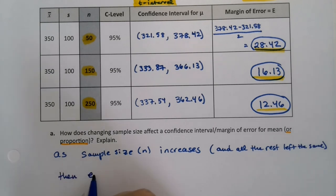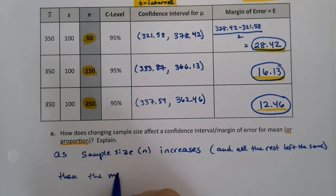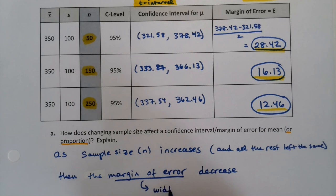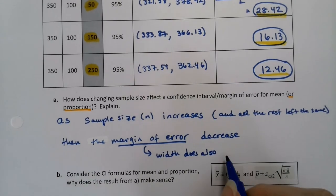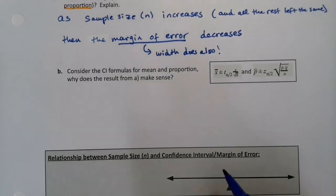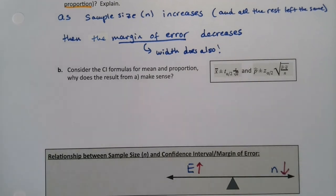And if margin of error decreases, that means the width does too, because they are very closely related. This means that they're on a teeter totter together. We already saw this, but I'll say it again. You have error on one side, you have sample size on the other side. If you raise your error, you lower your sample size and vice versa. What we just did on this page was the opposite. We actually raised our sample size.